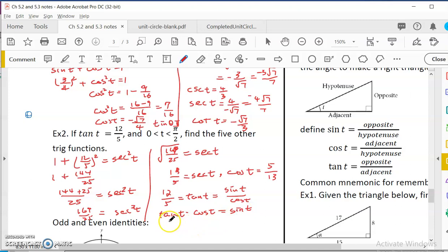So my tangent t was 12 over 5. The cosine t that I had earlier was 5 over 13. So that would be 12 over 13. So I'll have sine t.